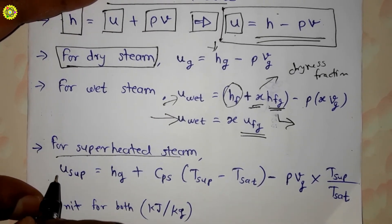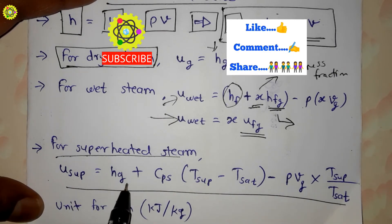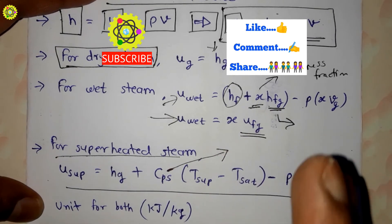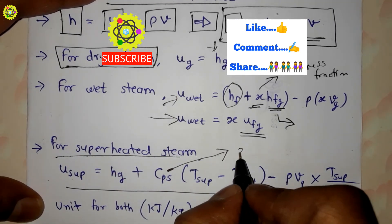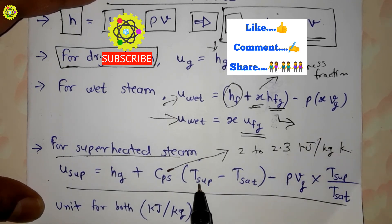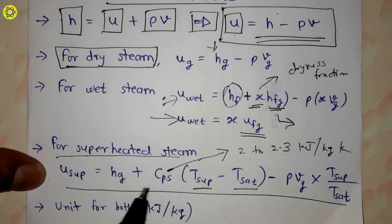For superheated steam, internal energy is calculated by: u_sup = h_g + Cps·(T_sup − T_sat) − p·v_g·(T_sup / T_sat), where Cps is the specific heat of superheated steam with a value ranging from 2 to 2.3 kJ/kg·K, T_sup is the temperature of superheated steam, and T_sat is the temperature of saturated steam.